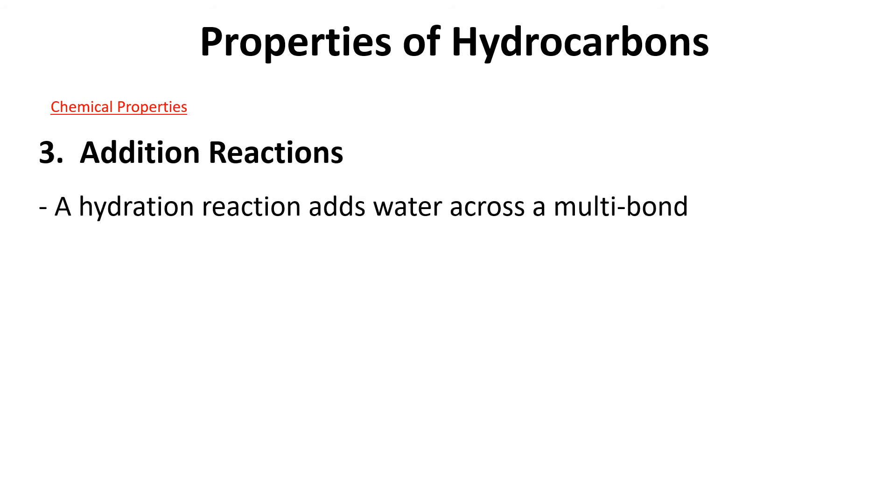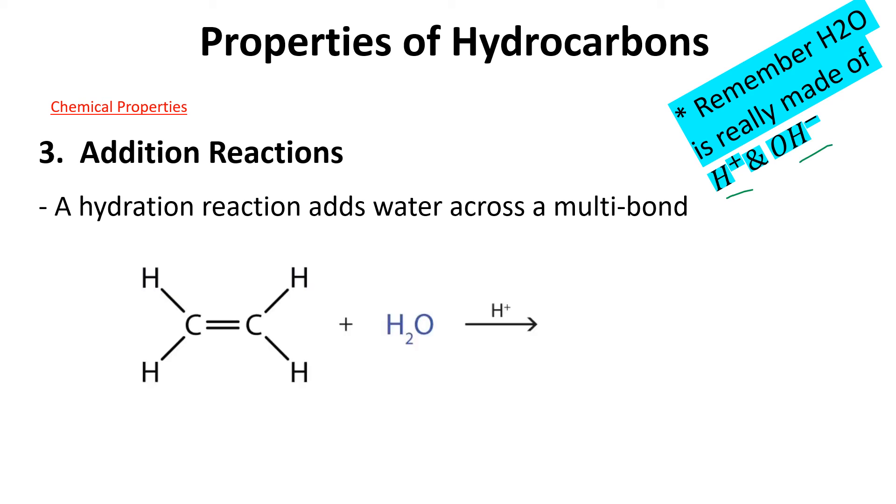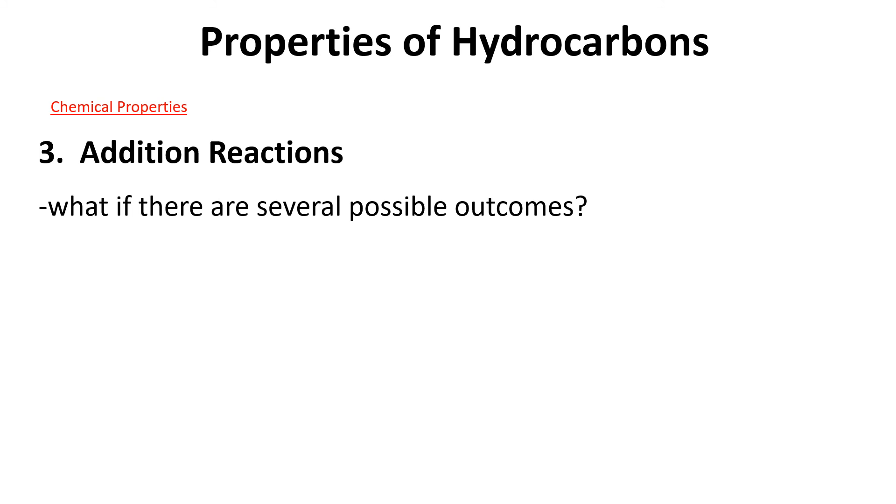Now there's one complicated thing we have to talk about here. A hydration reaction adds water across a multi-bond. We need to remember that we've got hydrogen and OH going on here. This molecule here is HOH, so we're going to break the double bond. One hydrogen goes on that side and the OH is going to go over to that side. In terms of naming this one, this would be ethene, that would be water, and then this would be ethanol. You could also name it hydroxyethane, and I like that one personally.